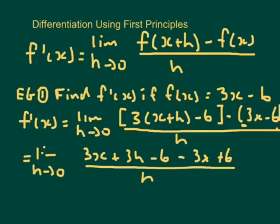Okay, what does that equal? Well, it equals the limit as h goes to 0. What do we notice? Well, the 3x's are going to cancel out, aren't they? There's a 3x there and a 3x there. And what else? The 6's are going to knock each other out, negative 6 and positive 6 there. So we'd just end up with 3h over h.